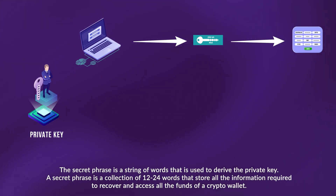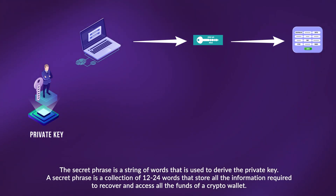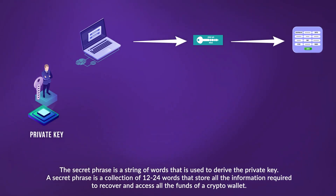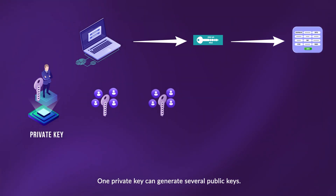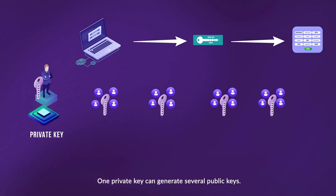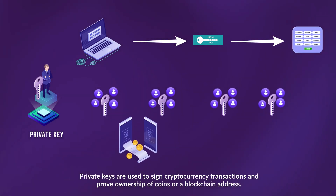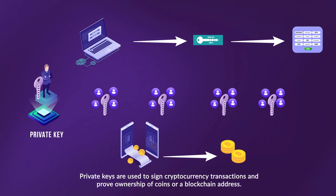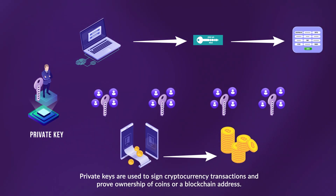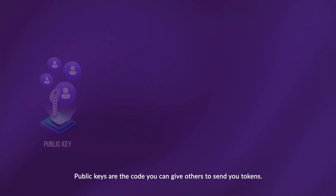A secret phrase is a collection of 12 to 24 words that stores all the information required to recover and access all the funds of a crypto wallet. One private key can generate several public keys. Private keys are used to sign cryptocurrency transactions and prove ownership of coins or a blockchain address.